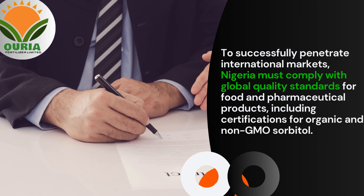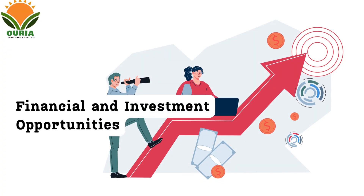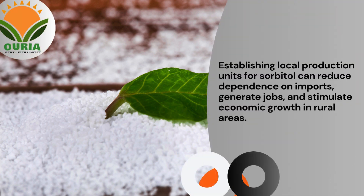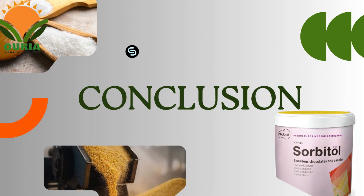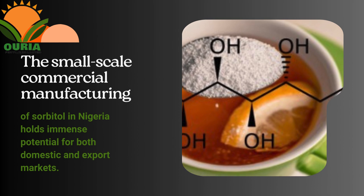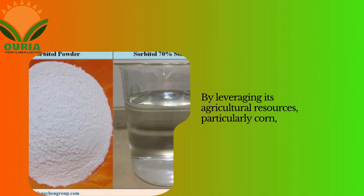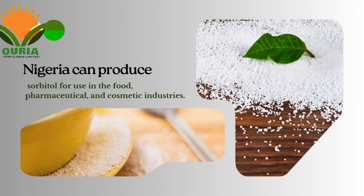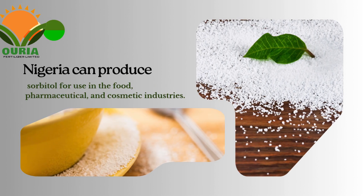Financial and investment opportunities: Small-scale sorbitol manufacturing in Nigeria presents significant investment opportunities. Establishing local production units for sorbitol can reduce dependence on imports, generate jobs, and stimulate economic growth in rural areas. Conclusion: The small-scale commercial manufacturing of sorbitol in Nigeria holds immense potential for both domestic and export markets. By leveraging its agricultural resources, particularly corn, Nigeria can produce sorbitol for use in the food, pharmaceutical, and cosmetic industries.